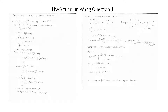Homework six, question one. The first question asks: if X and Y have joint density function f(x,y) = (1 + xy)/a, find a so that the above is a valid joint density function. We know the range for x is from negative one to one, and for y is negative one to one. The equation becomes the double integral from negative one to one of f(x,y) dx dy, and we do the dx integral first.